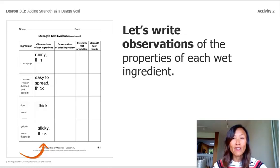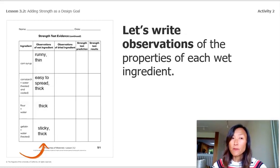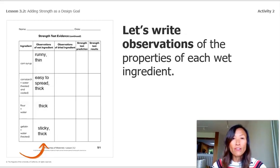Now that we've done our test, let's write observations of the properties of each wet ingredient. Corn syrup: runny and thin. Cornstarch and water (heated and cooled): easy to spread and thick. Flour and water: thick. Gelatin and water (heated): sticky and thick.